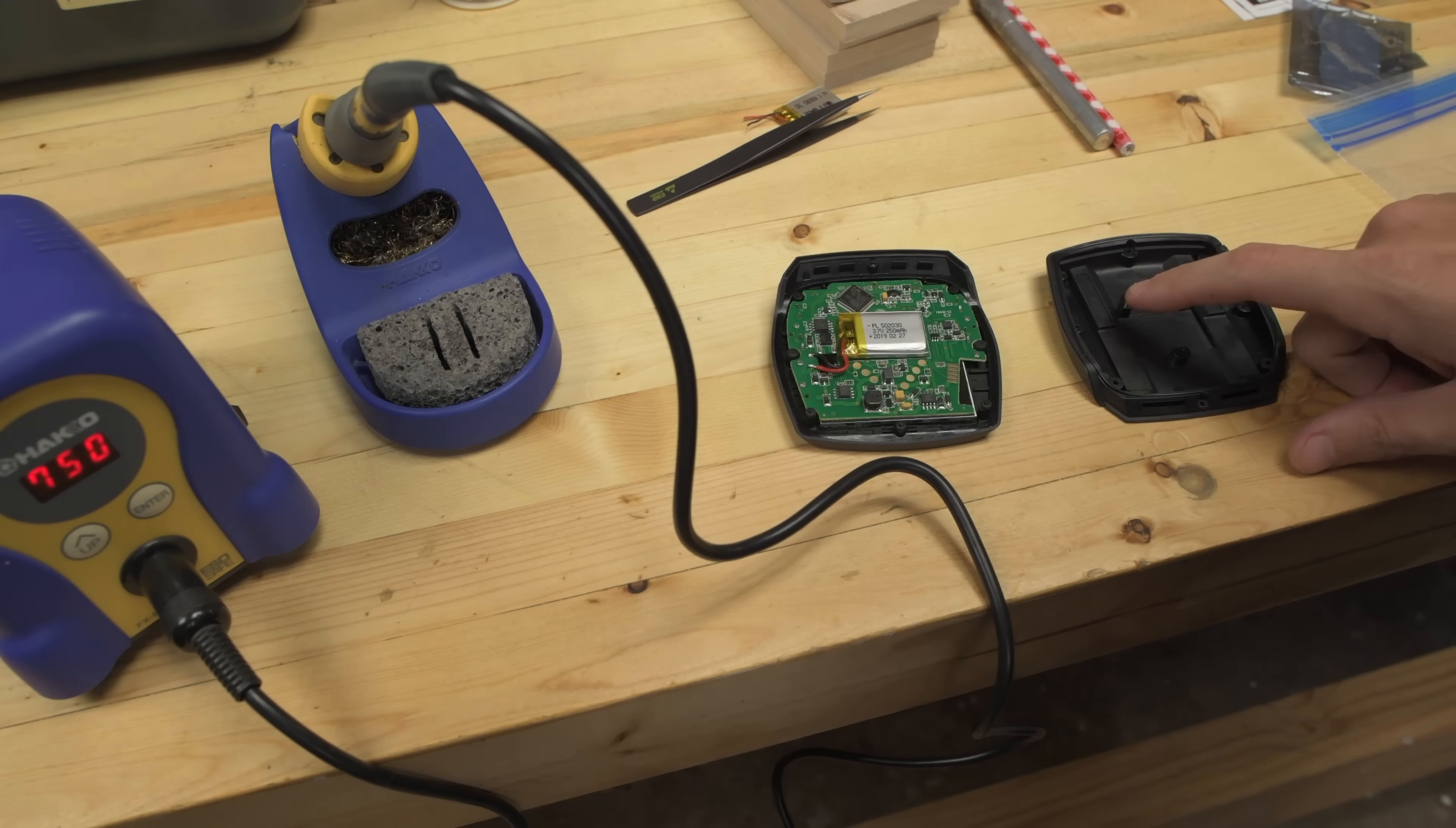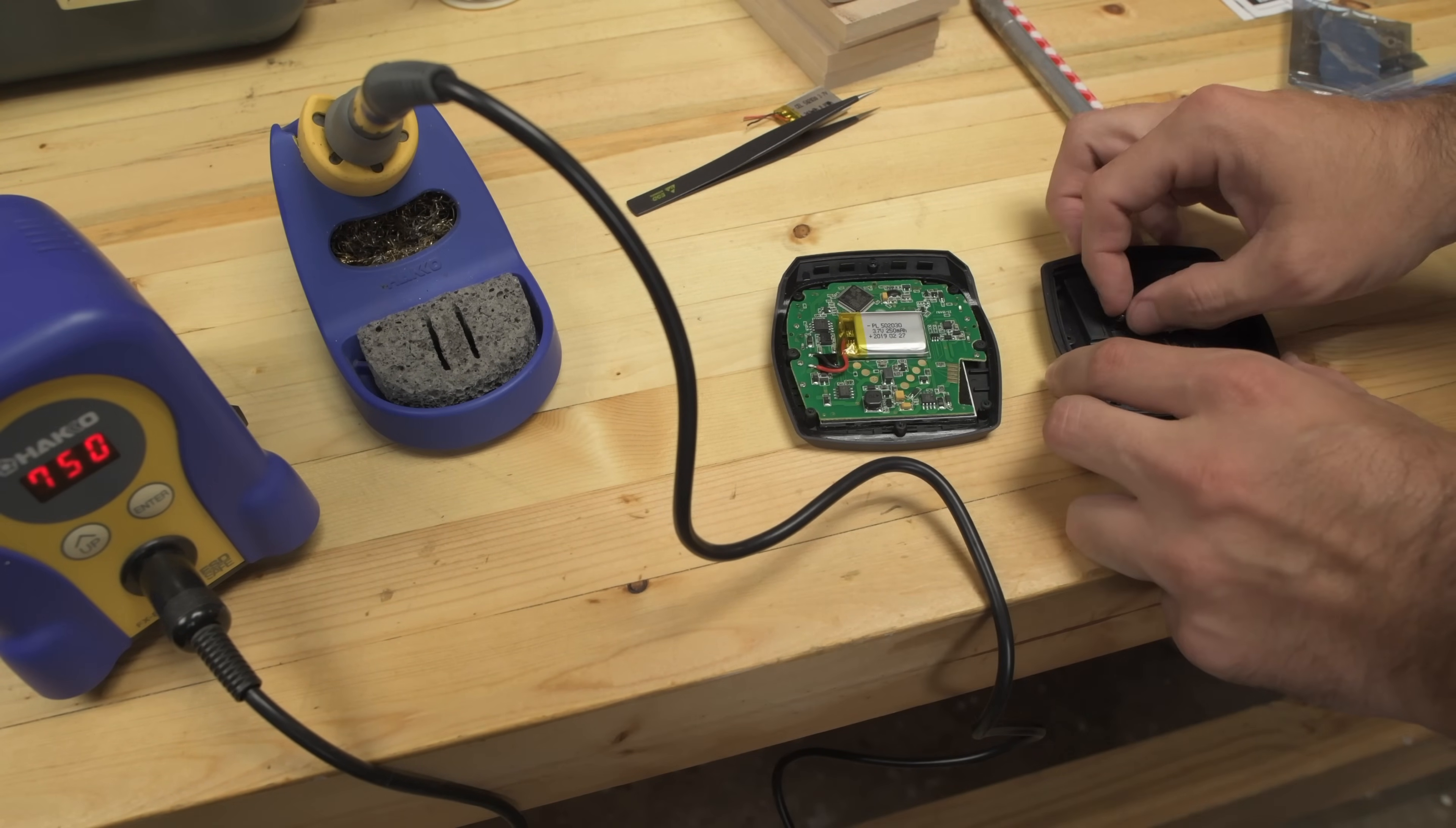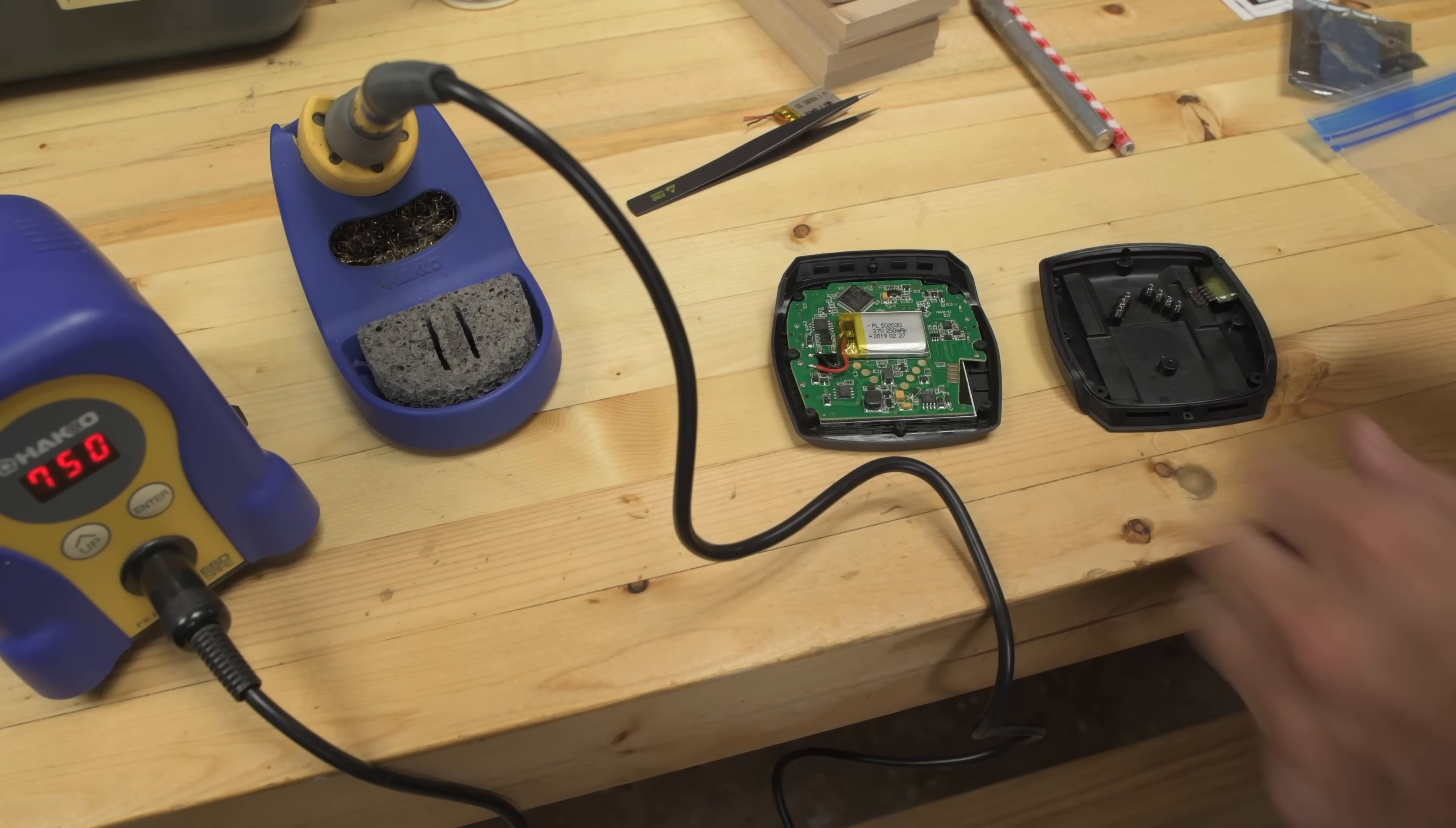For reassembly, you want to make sure that all of your contacts are still in place because these do come out. I had one come loose while I was working. You can see what that looks like when it comes out. There's just a little pin there on a spring. So you want to make sure that you have all of them. Otherwise you'll be putting it back together and it won't work.